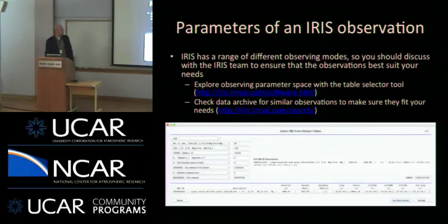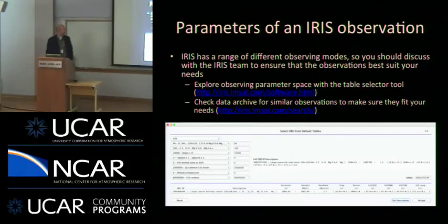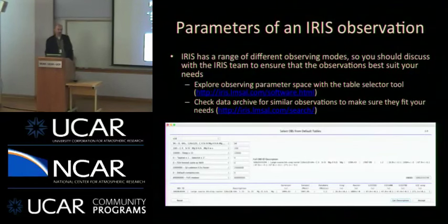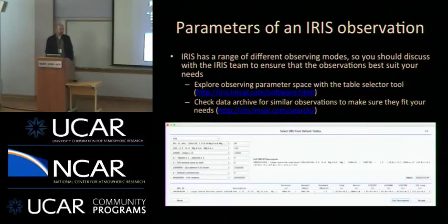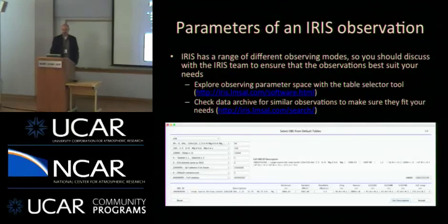Once you've decided you need IRIS data, it's important to think carefully about exactly what you want IRIS to do. It has a range of different observing modes but doesn't really have a default observing mode. If you ask for the best it can do at everything — maximum resolution, maximum field of view, spectral coverage, and cadence — that's generally not practical; it'll run out of memory in a short amount of time. Planning an observation with IRIS requires thinking carefully about trade-offs. We have a table selector tool used by planners for actually designing the IRIS observing sequence.